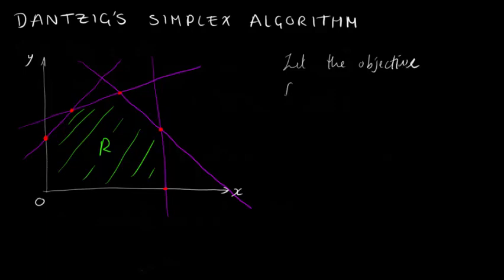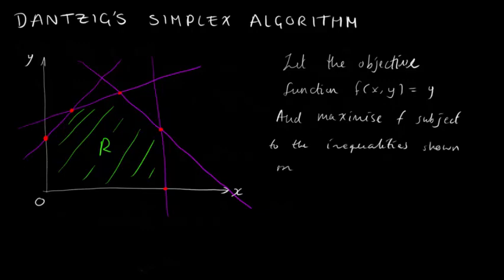So if we had an objective function of x and y constrained by these inequalities, then the solution would have to be somewhere within the region of r. Now, say the aim was to maximize an objective function that was just equal to y for the sake of demonstration.